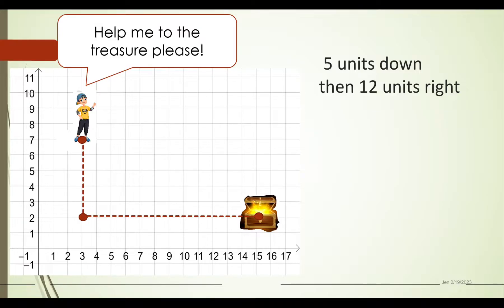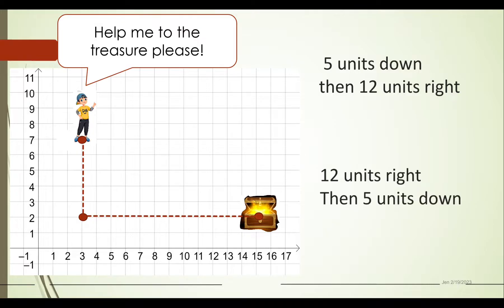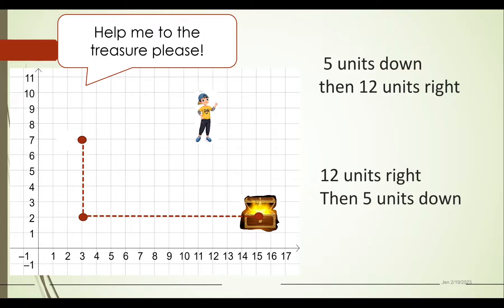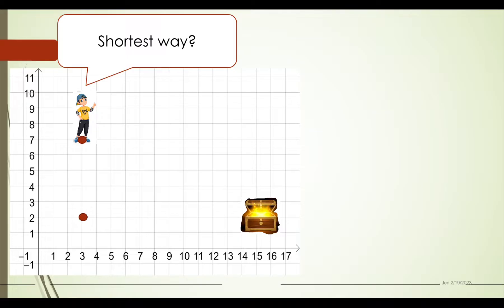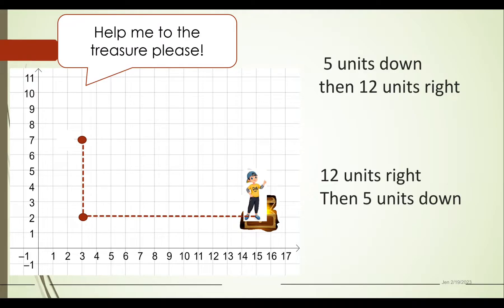Or we can say: Coolie, go 12 units to the right, then five units down. Let's see if he can still reach the location correctly. There you have it — he was still able to reach the treasure. But these two paths are quite a long way from the original position to the treasure. Could there be a shorter way?